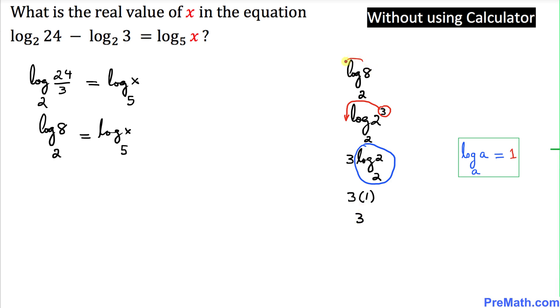So thus we can see that the log of 8 with a base 2 turns out to be equal to 3. So on the left-hand side this part could be now written as 3 equal to log of x with a base 5.